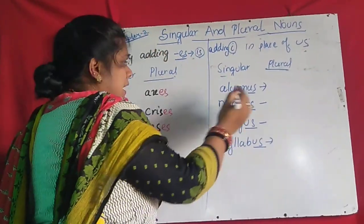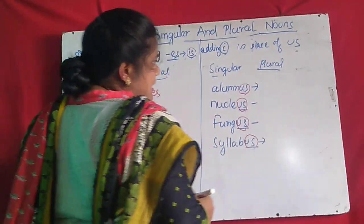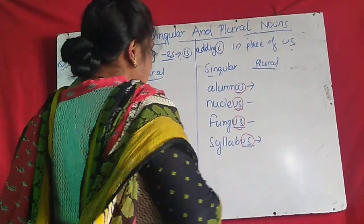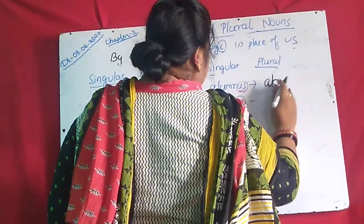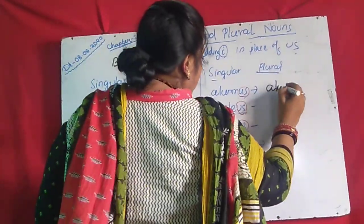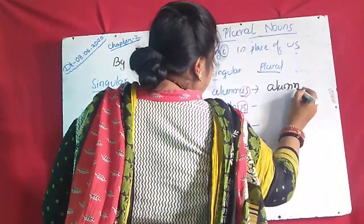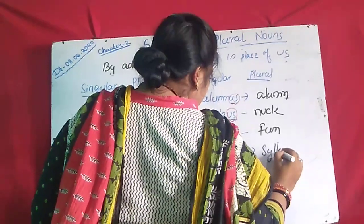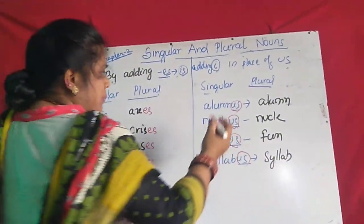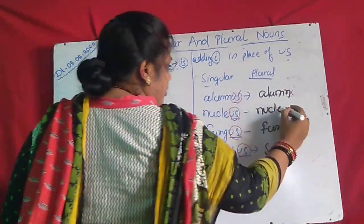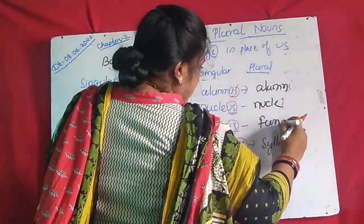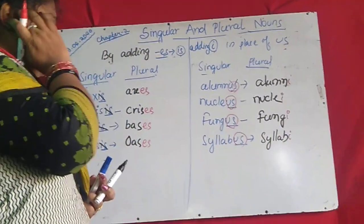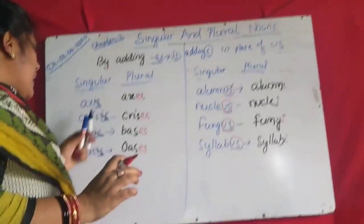Another rule: if the word is ending with US, then the plural will be formed by simply adding I in place of US. So 'alumnus' — A-L-U-M-N-U-S — US is cut, simply add I: 'alumni.' 'Nucleus' — N-U-C-L-E-U-S — becomes 'nuclei.' 'Fungus' — F-U-N-G-U-S — becomes F-U-N-G-I: 'fungi.' 'Syllabus' — becomes 'syllabi.' So here US is cut and simply add I. Here IS is cut and add ES.